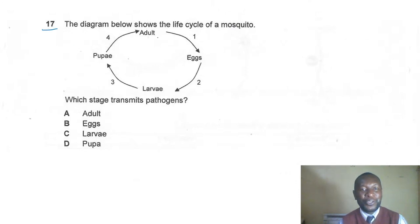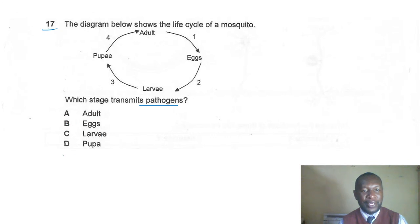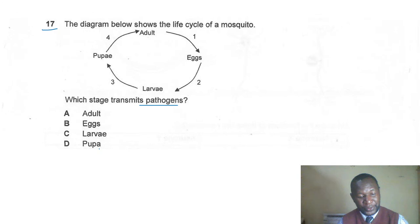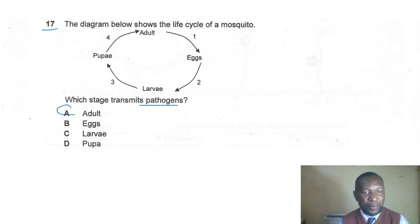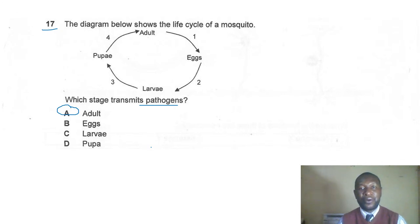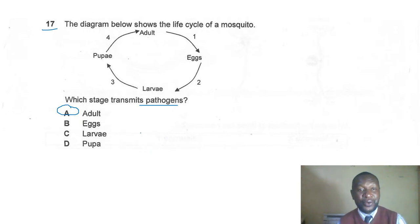Question seventeen: the diagram shows the life cycle of a mosquito — adult, eggs, larva, pupa, adult. Which stage transmits pathogens? The correct answer is A — the adult. Adults fly to decomposing organic matter or human waste, pick up bacteria, then contaminate uncovered food and water.